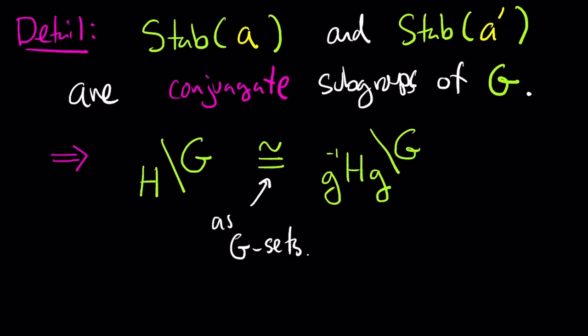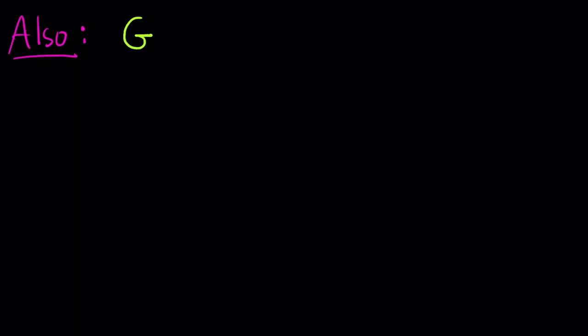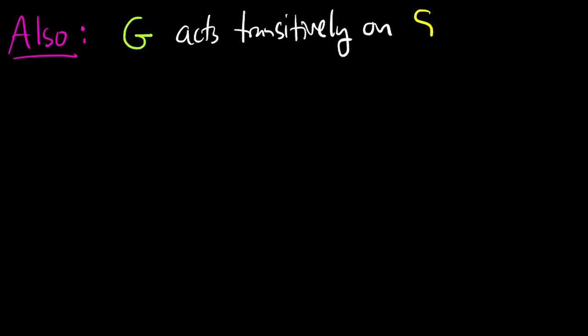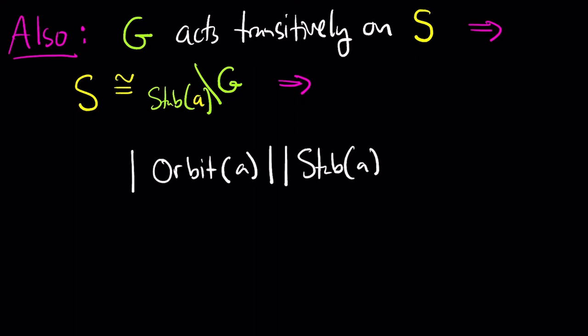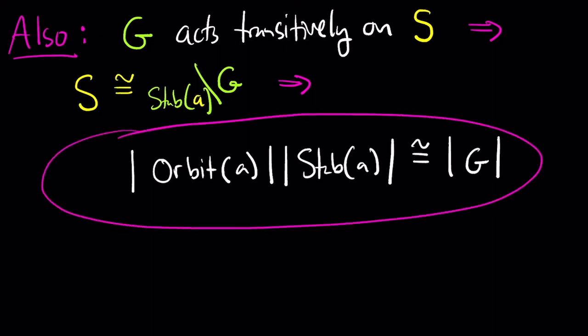Another detail worth pointing out: if you have a G-set S on which G acts transitively, we know it's isomorphic to G mod H where H is the stabilizer subgroup, and we know how many elements are in G mod H — how many cosets there are. This gives a theorem known as the orbit-stabilizer theorem, a very useful theorem in mathematics. When G acts transitively on a set S, the cardinality of the orbit of any element times the cardinality of the stabilizer of that element equals the cardinality of the group G.